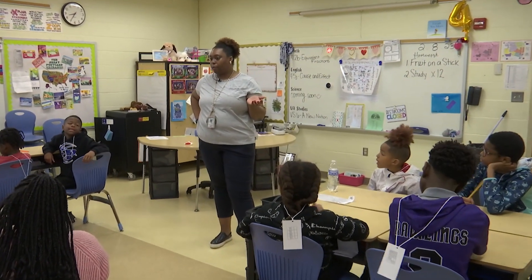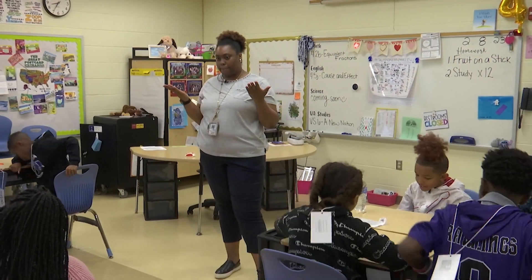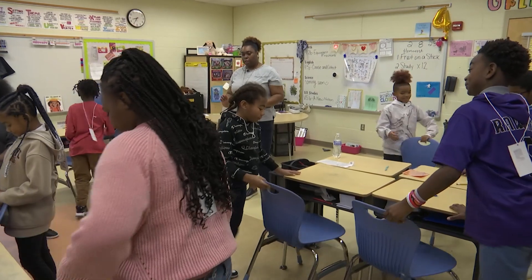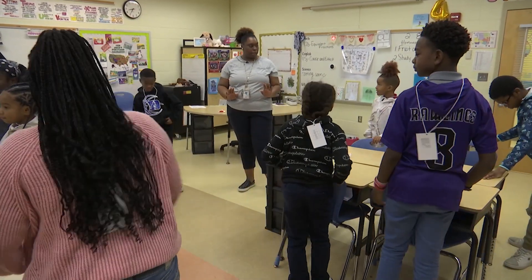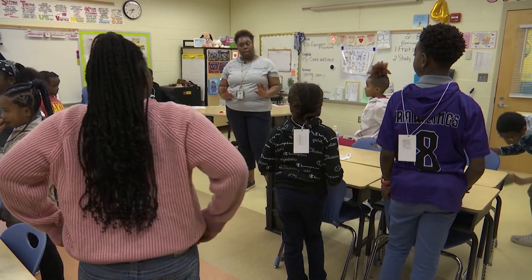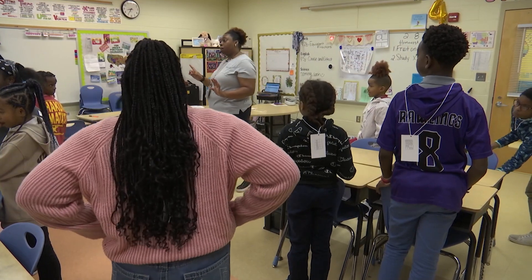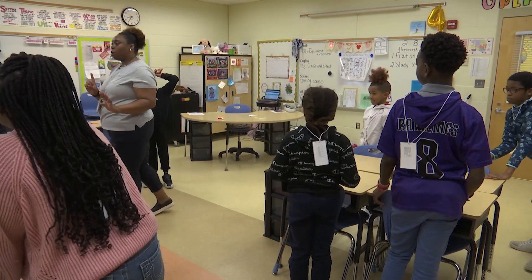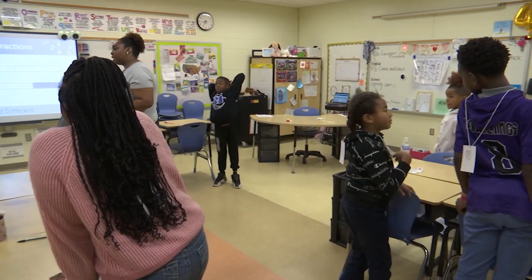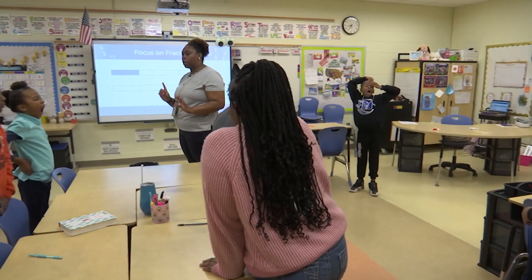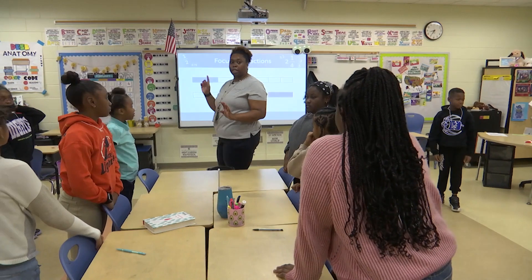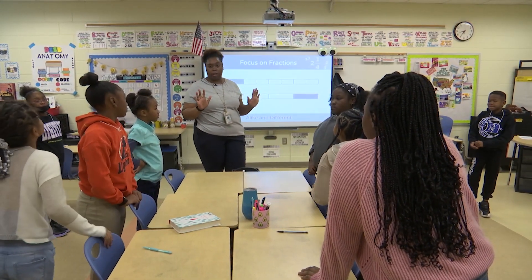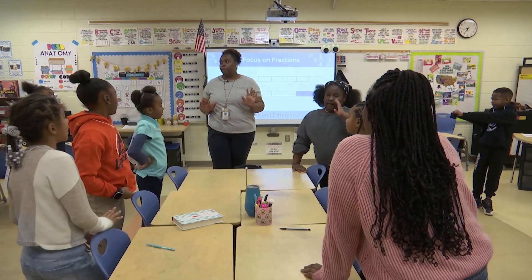You are going to walk around and ask your classmates questions to see if you can find your equivalent fraction family. There are five families in here. How many families? Five. Five of the families have green numbers.